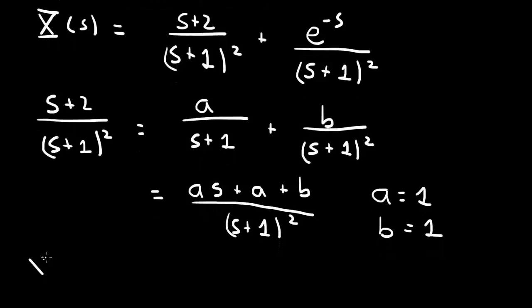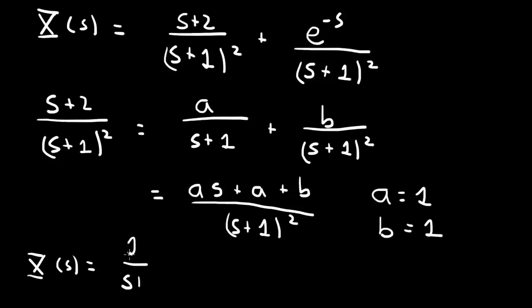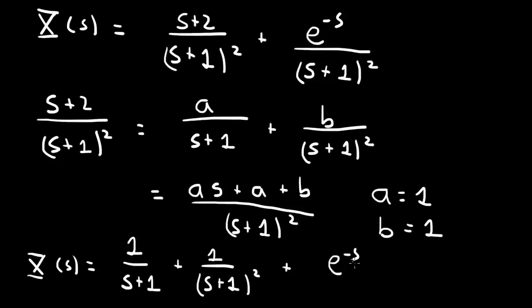So we've got our X of s, which is equal to 1 over s plus 1, plus 1 over s plus 1 squared, plus e to the minus s over s plus 1 squared.